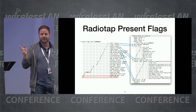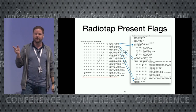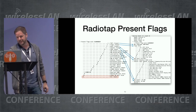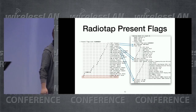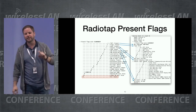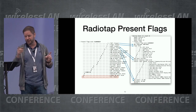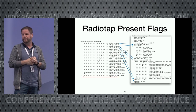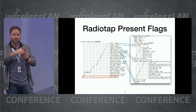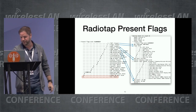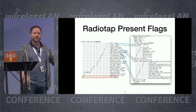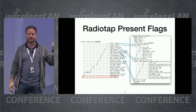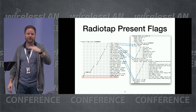One of the nice things about the radiotap header — especially relevant with the introduction of 802.11ax — is that it can be extended. The last bit in the 32-bit present flags field is called the extension bit. If it's set to 1, it means that 32-bit value is followed by another 32-bit field. So the first set of fields is numbered 1 through 32; when you get an extension you add 32, giving you fields 33, 34, 35, and so on. The next extension bit is bit 63, and you can chain more of these extension fields as needed.